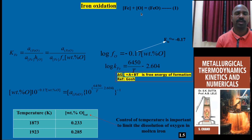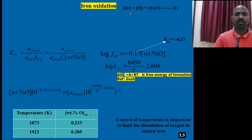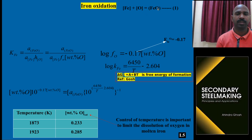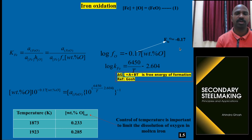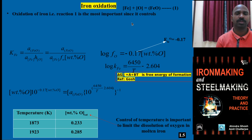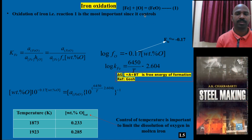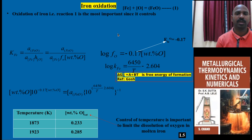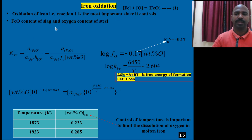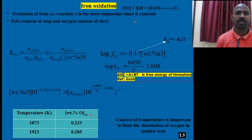Let us see Iron Oxidation. In primary steelmaking, molten metal and oxygen react and give rise to FeO. So how does it occur? From reaction 1, how do you control it? There should be less iron content going into the slag and more iron content retained in the molten metal as steel. This FeO content is in slag form and oxygen content is retained in the steel.